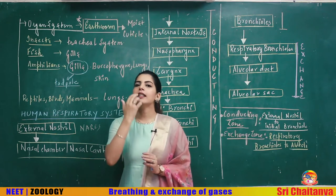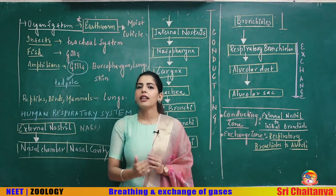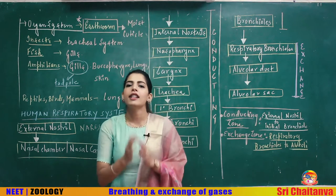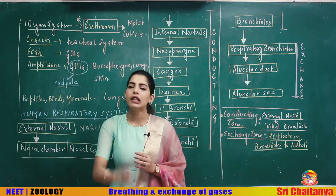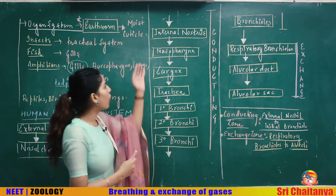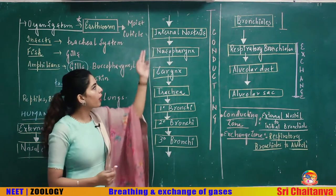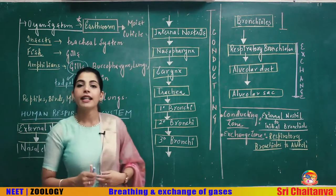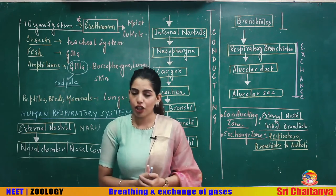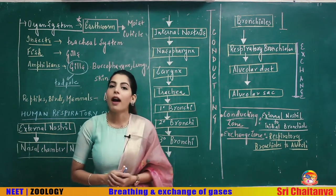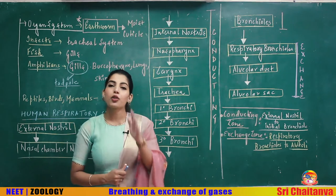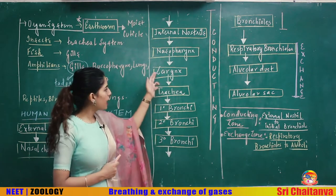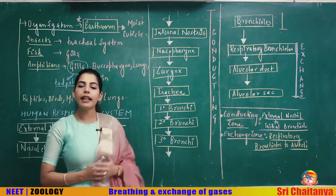Just as there are two external openings, the nasal chamber also opens posteriorly into two openings called internal nares or internal nostrils. The internal nares open into the nasopharynx — the part of pharynx we discussed in the digestion chapter.